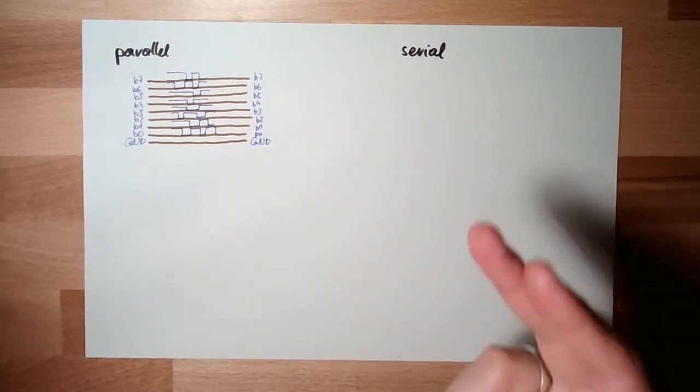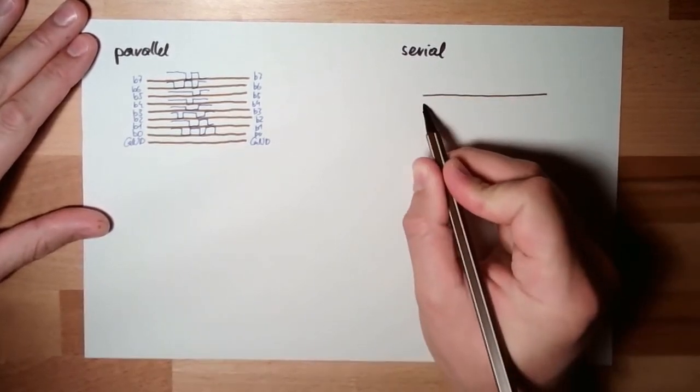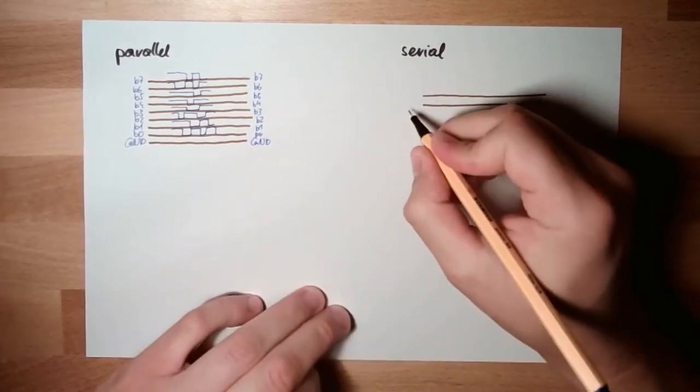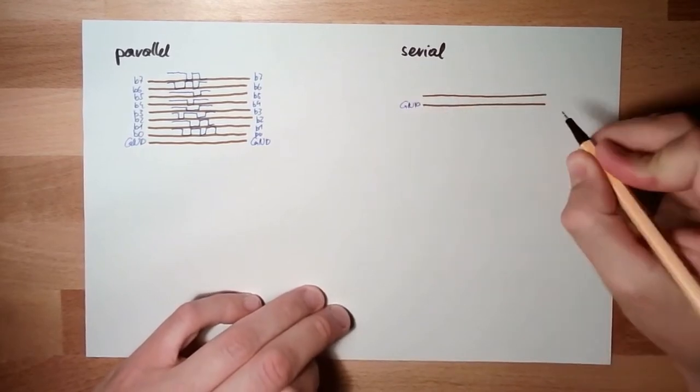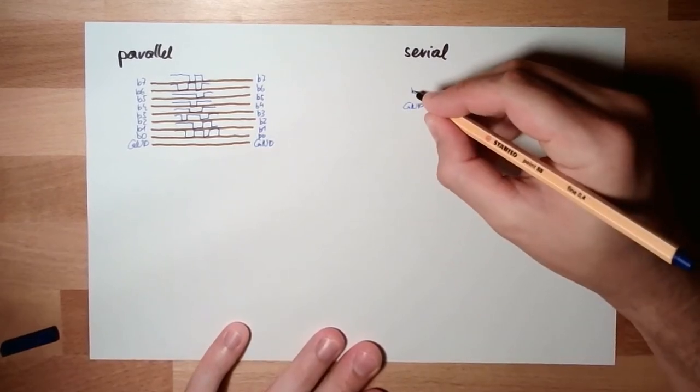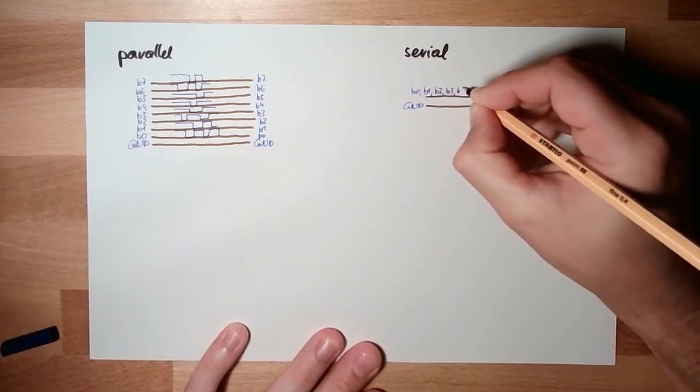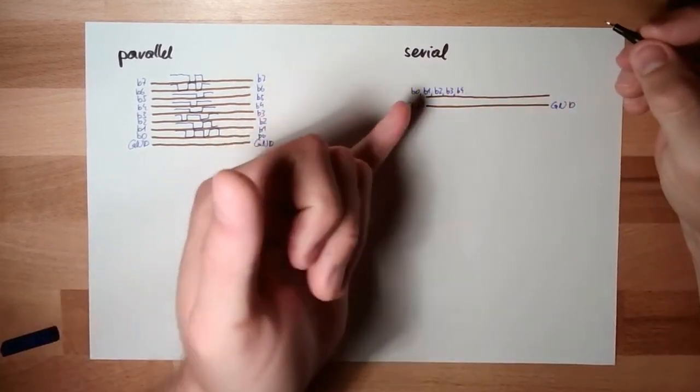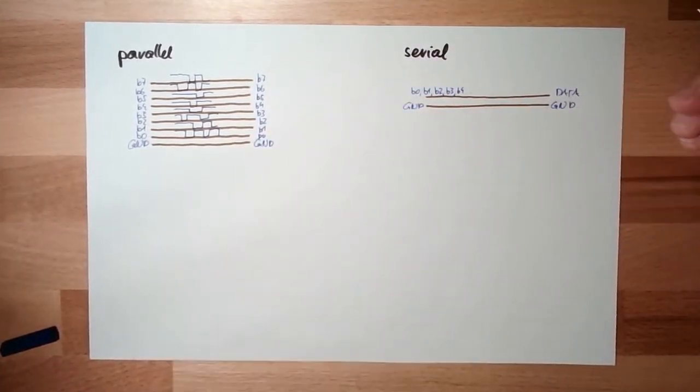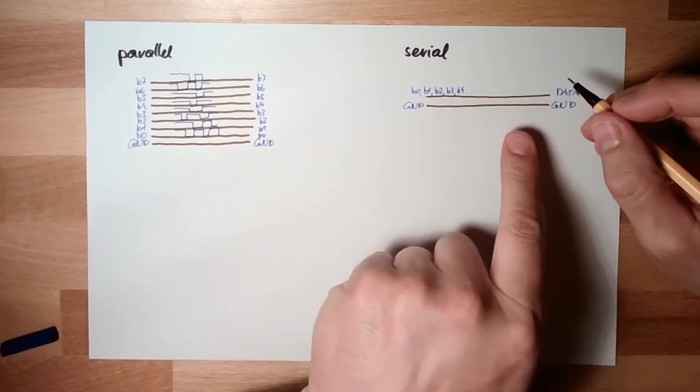On the other hand, I have serial communication. I only have two lines: one is the data line, one is ground. On the data line I first send byte number zero, then byte number one, byte number two, byte number three, byte number four, and so on. One after the other goes on the data line. That is why the bits are transferred serial.